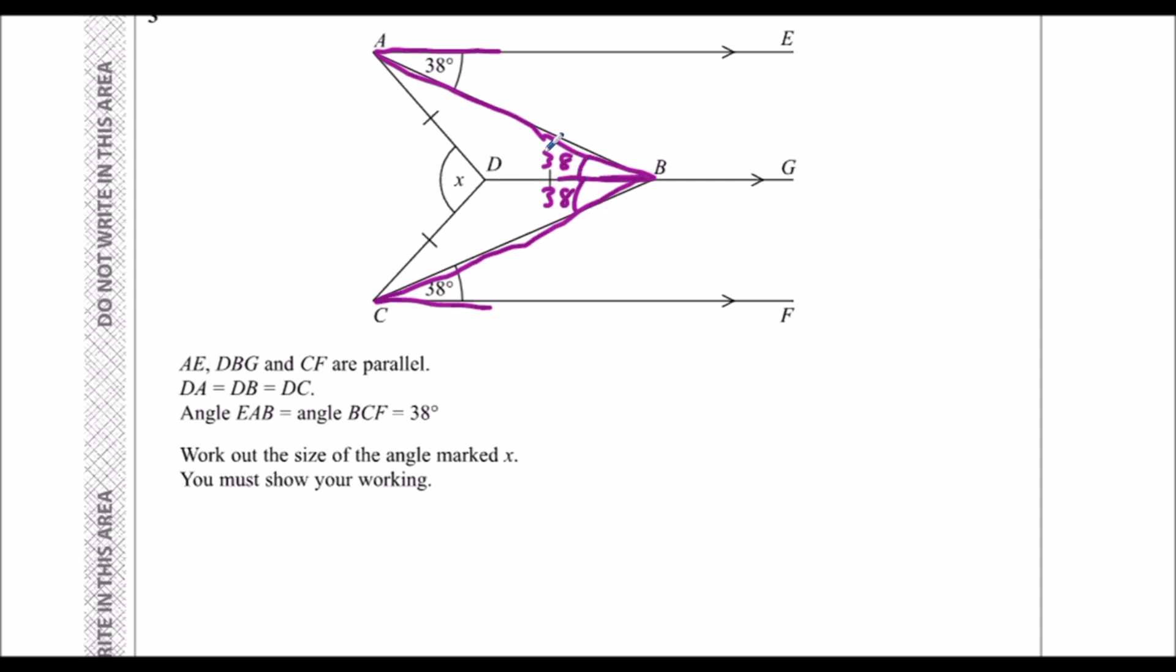So we've got 38 degrees here and 38 degrees here because alternate angles are equal. It doesn't say we've got to give our reasons, so we don't have to write down everything we're doing, but I'll write that down anyway. So alternate angles are equal.